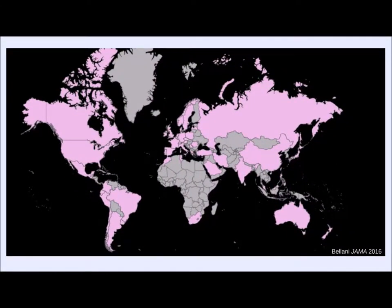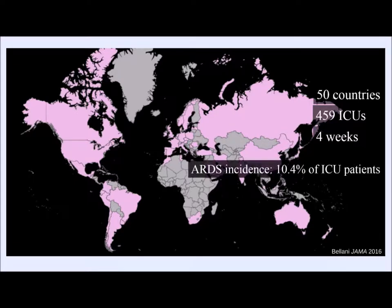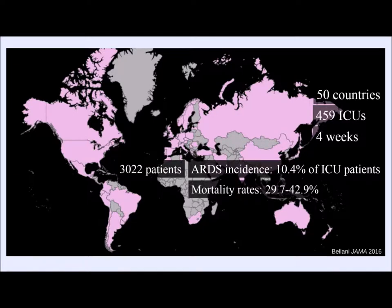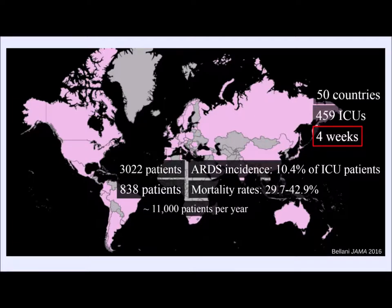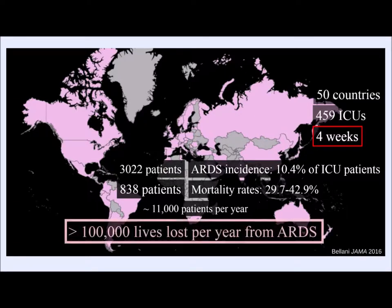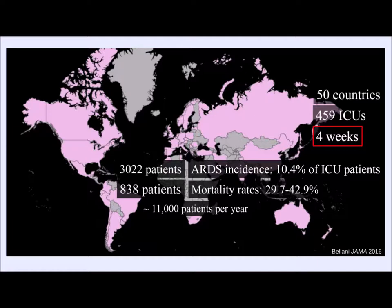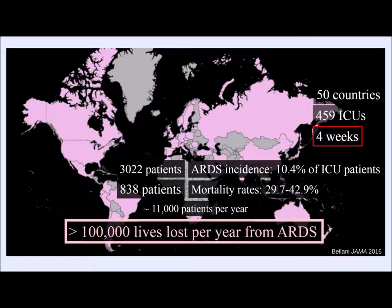A nice epidemiologic study by Bellani looked at where we are with ARDS. They studied 50 countries, 459 ICUs over a 4-week period. ARDS incidence was 10.4% of ICU patients — just over 3,000 patients — with mortality between 30–43%, about 838 patients. Extrapolating over a year across less than one-third of the world's countries and only 459 ICUs, we're likely losing over 100,000 lives per year from acute respiratory distress syndrome.